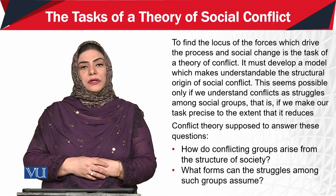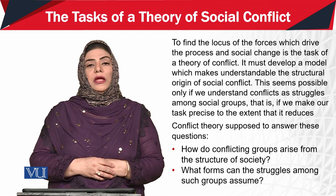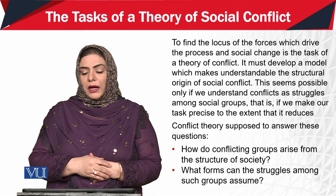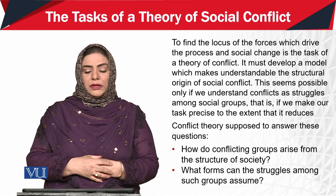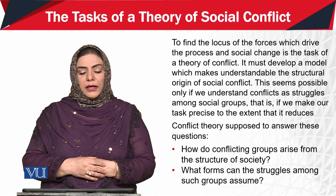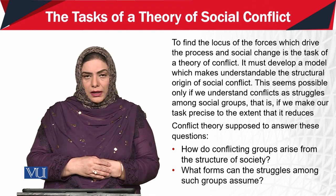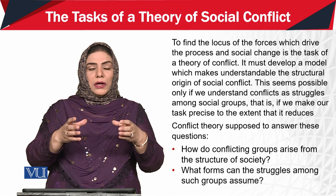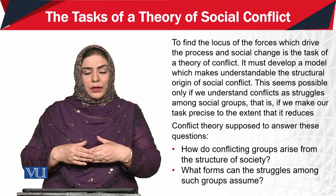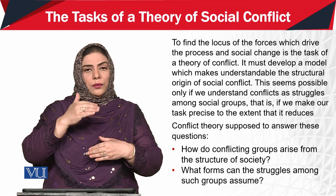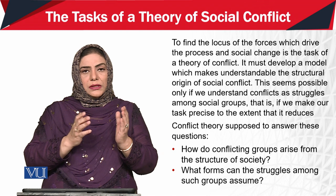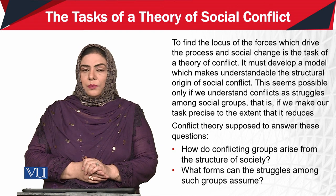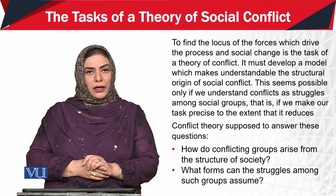There are some important questions with the help of which we can understand this basic philosophy and the tasks of the theory of social conflict. Number one: how do conflicting groups arise from the structure of society? किसी भी मौशरे का ek structure है — authority भी है, authority को apply करने वाला system मौजूद है, rules और regulations हैं — अब फिर conflict कैसे rise करता है?